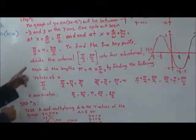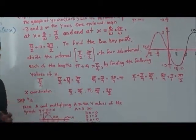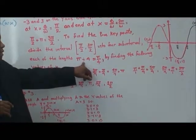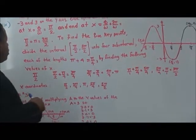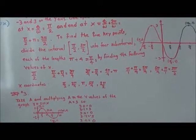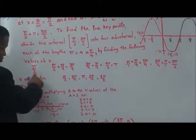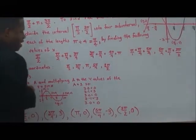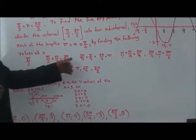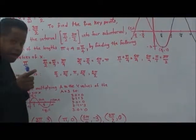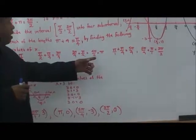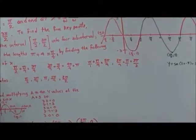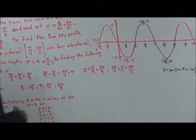To find the five key points, divide the interval from π/2 to 3π/2 into four sub-intervals, each of length π/4. Adding π/4 successively: π/2, then 3π/4, then π, then 5π/4, then 3π/2. These are your five x-coordinates.